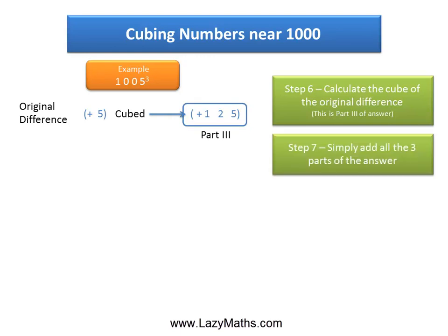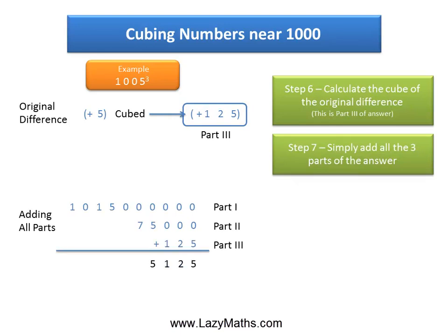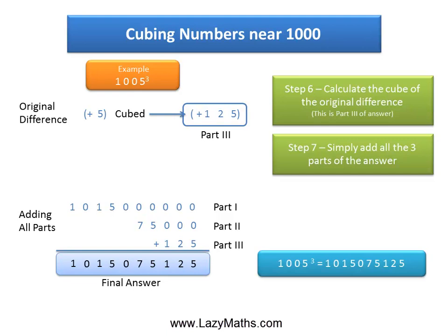Now take all three parts — part 1, part 2, and part 3 — and add all of them up to get the final answer. The final answer is 1,015,075,125. So 1,005 cubed equals 1,015,075,125.